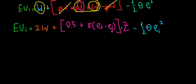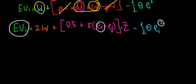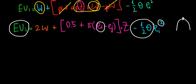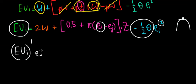To find the optimal effort level we differentiate the expected utility with respect to effort and set it equal to zero. The effort term is squared with a negative coefficient, giving a downward parabola, so the maximum expected utility occurs at the peak where the derivative equals zero.